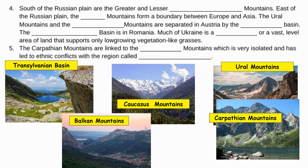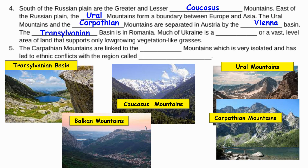The Russian Plain is the largest plain in Eastern Europe and Russia. You also have the Great Hungarian Plains, which is a fertile area located mainly in the country of Hungary. South of Russia's plain, you have the Greater and Lesser Caucasus Mountains. East of the Russian plain is the location of the Ural Mountains, which forms the boundary between Europe and Asia. The Ural Mountains and the Carpathian Mountains are separated in Austria by the Vienna Basin. You also have the Transylvania Basin, which is in Romania.